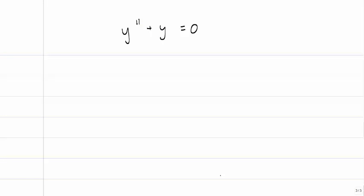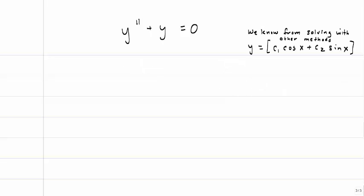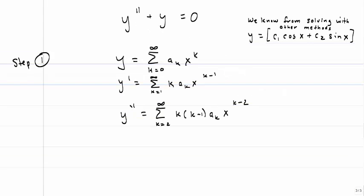Let's practice with another example: y double prime plus y equals 0. Now this is not one we'd typically want to solve with a series solution. Solving it the old-fashioned way via the characteristic equation gives r squared plus 1 equals 0, so r equals plus or minus i. That yields the general solution with cosine and sine. It's useful to practice new techniques against a problem whose answer we already know from other methods.